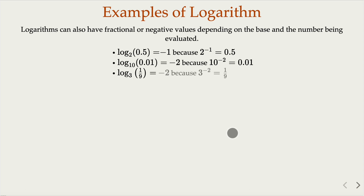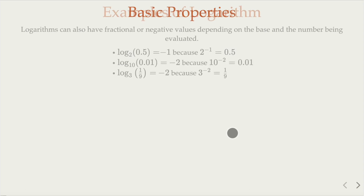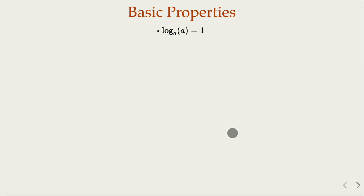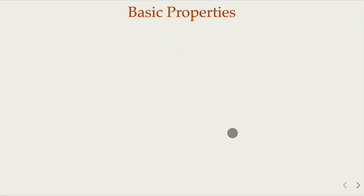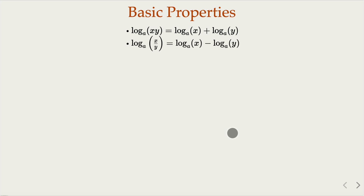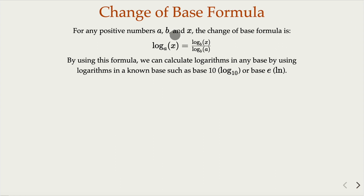Some other properties of this function: the log of the base equals 1, and by definition the logarithm of 1 equals 0, because a to the zeroth power is 1. Also useful: the product becomes the sum of logs, the division becomes the difference, the power becomes r times the log. Another very useful fact is the change of base formula, which allows us to evaluate any logarithm with a known base such as base 10 or base e (natural log).